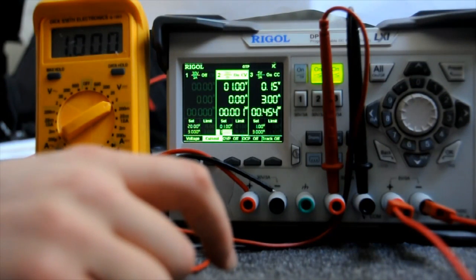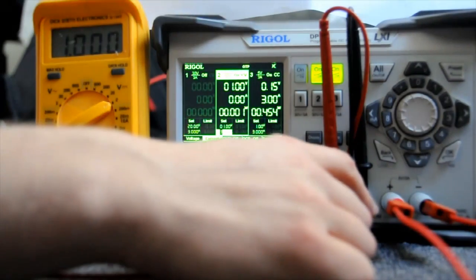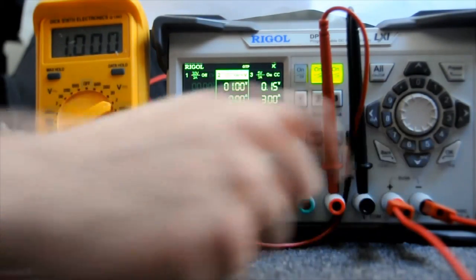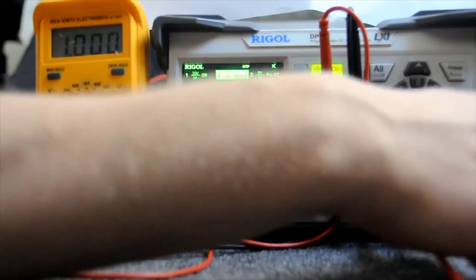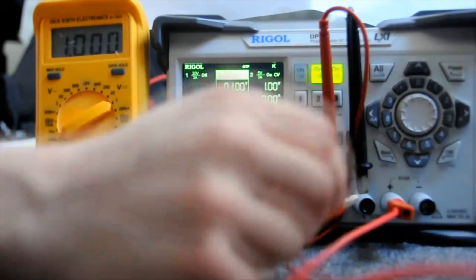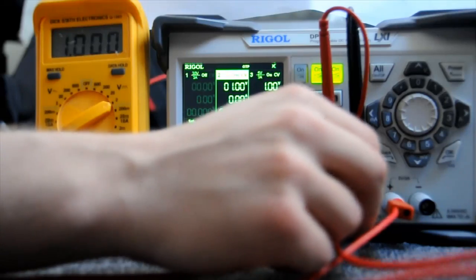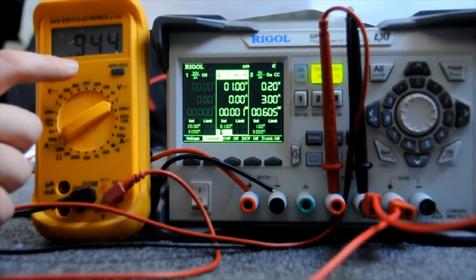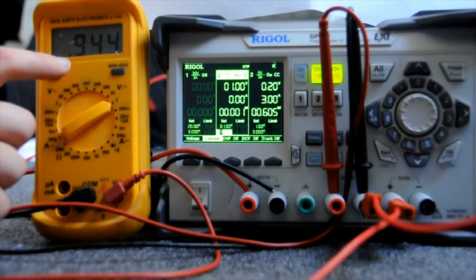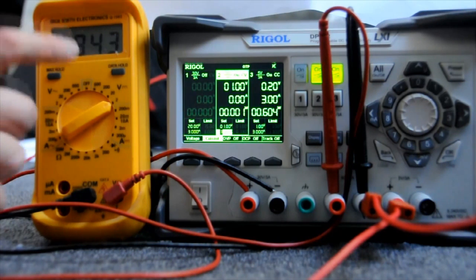Now the thing about the Rigol DP832 is that channel 2 minus and channel 3 minus are supposedly common. So it doesn't matter whether I plug this cable here into channel 3 minus or channel 2 minus. So how about I plug it in here? Uh-oh. Look at that.